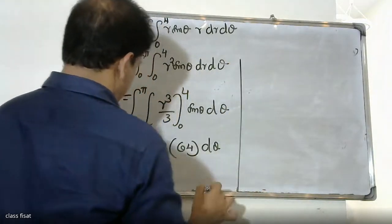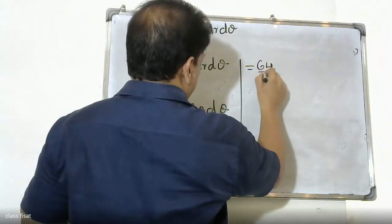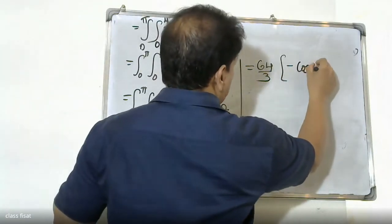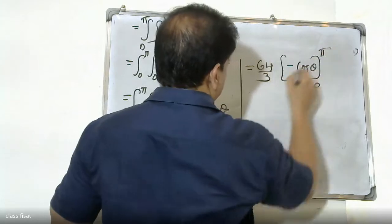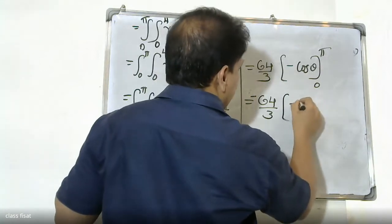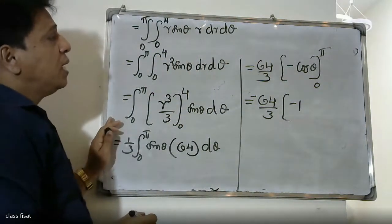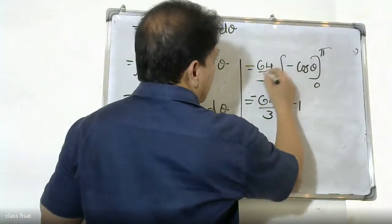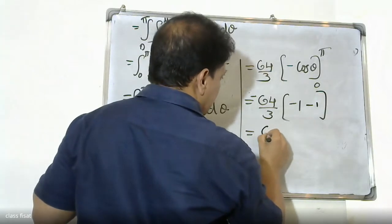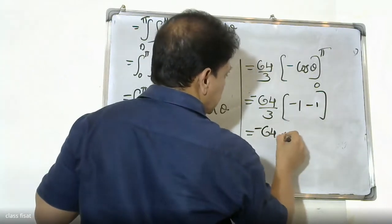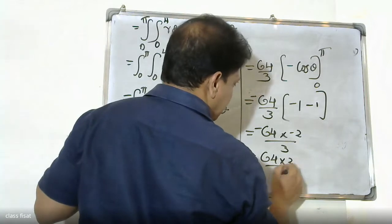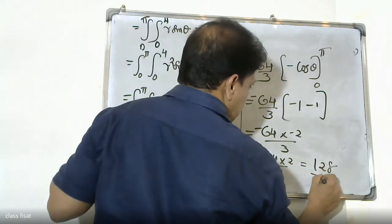Integrating sin θ gives −cos θ, evaluated from 0 to π. That gives −cos π − (−cos 0) = −(−1) − (−1) = 1 + 1 = 2. So the result is (64/3) · 2 = 128/3. The work done is 128/3.